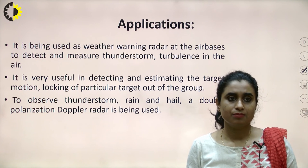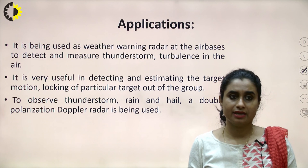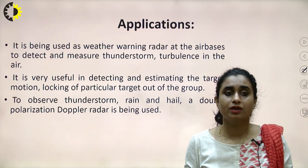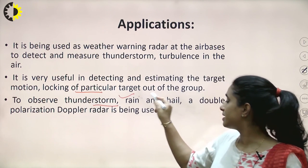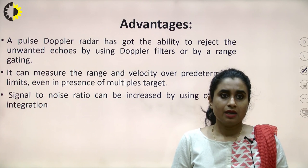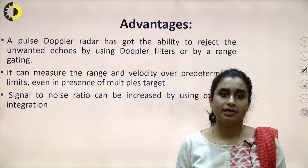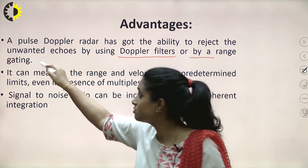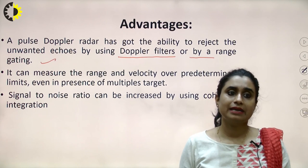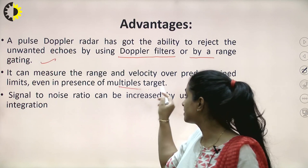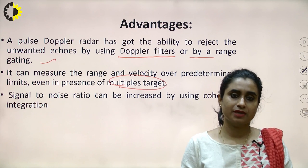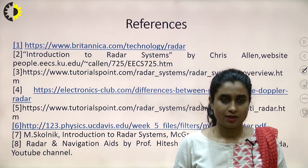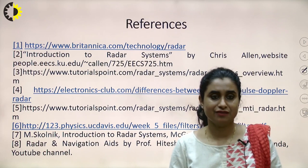Pulse Doppler radar is used in weather warning radar at air bases to detect and measure thunderstorm turbulence, and is useful in detecting and estimating target motion and locking onto particular targets — mostly for weather applications like thunderstorm and rain. Its advantages include the ability to reject unwanted echoes by Doppler filters or by range gating, the ability to measure range and velocity over predetermined limits even in case of multiple targets, and signal to noise ratio can be increased by using coherent integration using COHO. That is it for today — thank you.